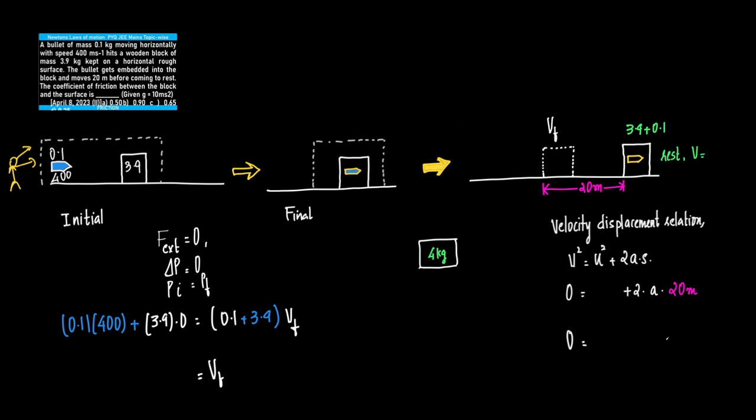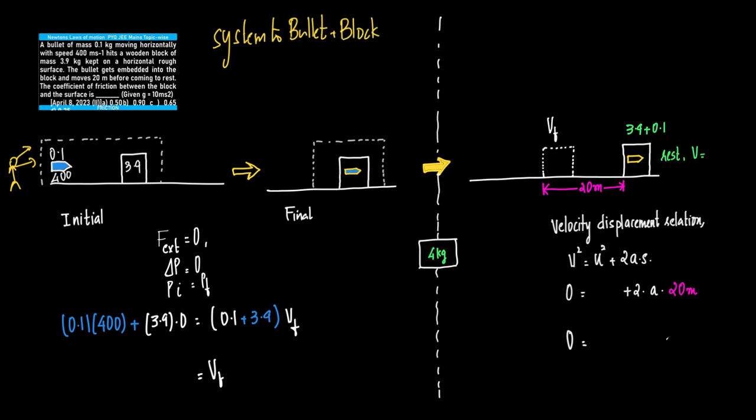Now let's understand what's happening using the diagram. I've taken two sets of diagrams. In step one, a 0.1 kg bullet moving at 400 m/s is embedding into the 3.9 kg block. I'll consider the system to be the bullet and the block together, represented by this dotted line.